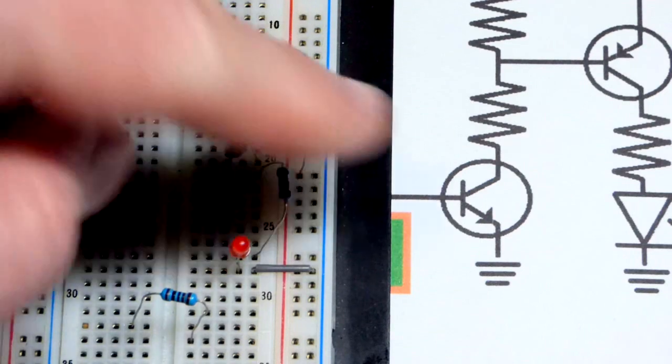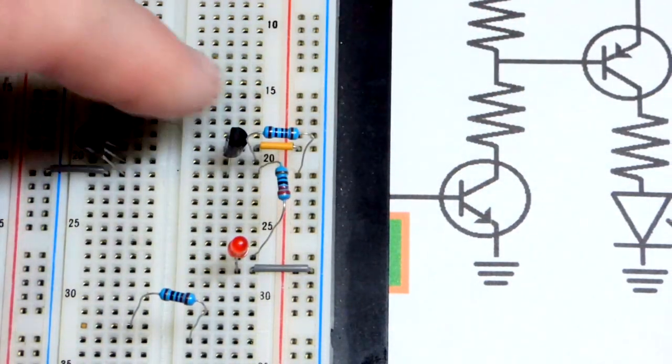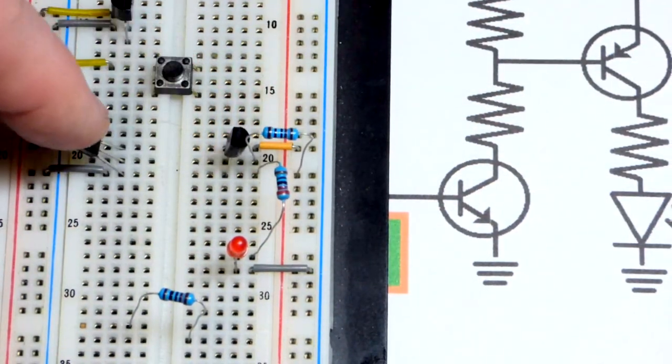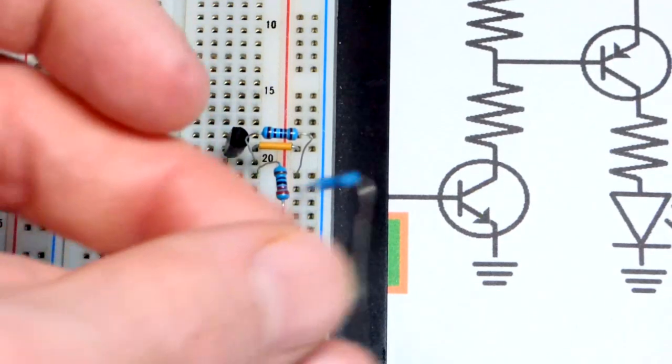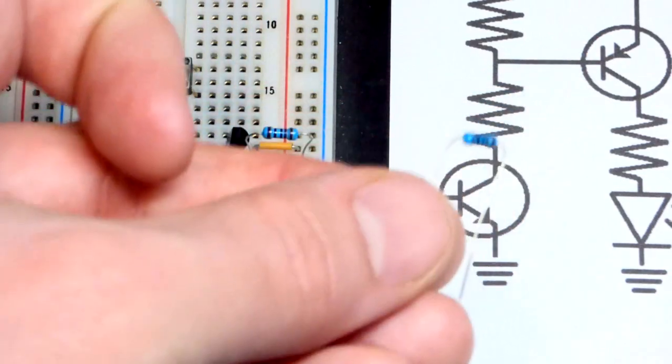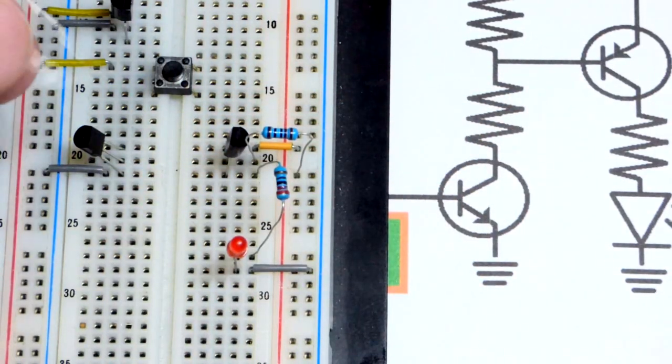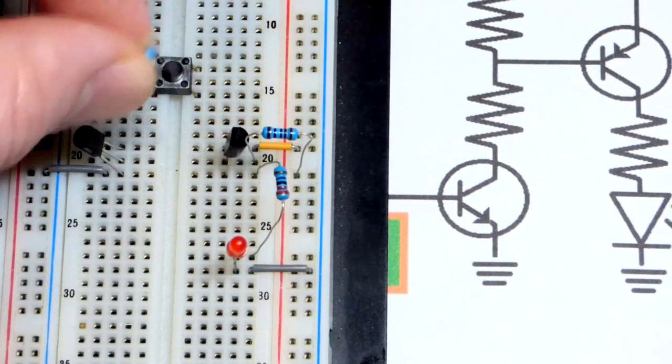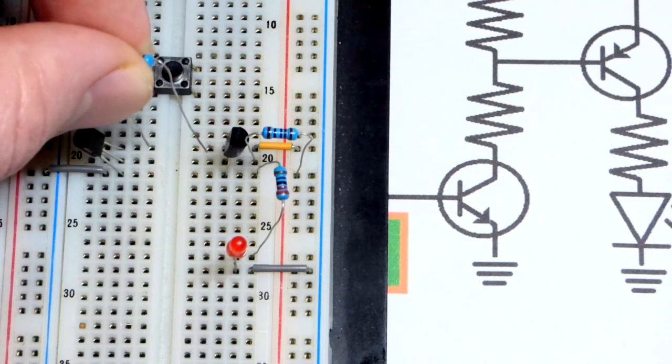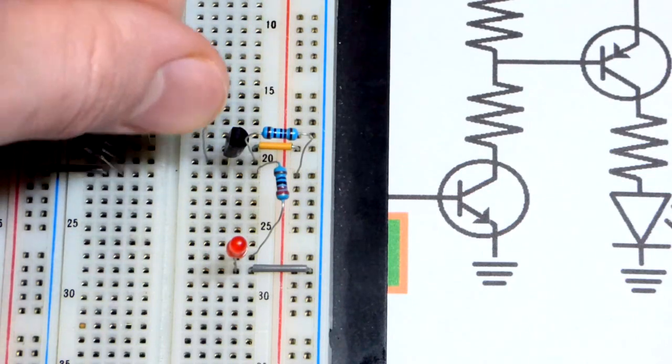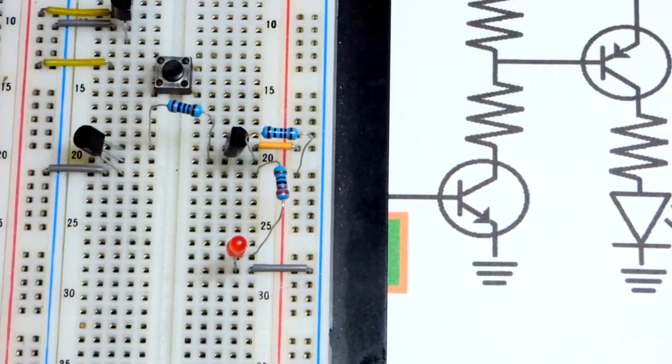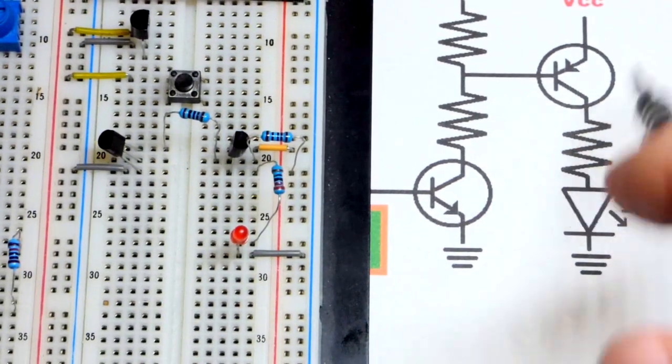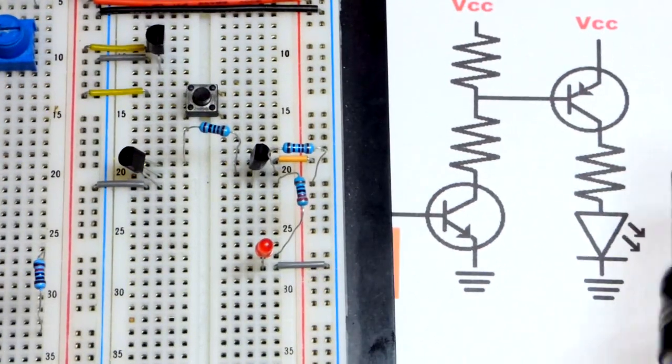That resistor is going from the base of the PNP bipolar junction transistor to the collector of the NPN bipolar junction transistor. I'm using a 1 kilo ohm again - a higher value should work, but I already have that 1 kilo ohm on the board. We just need a small amount of base current from the PNP bipolar junction transistor to turn it on and saturate it.